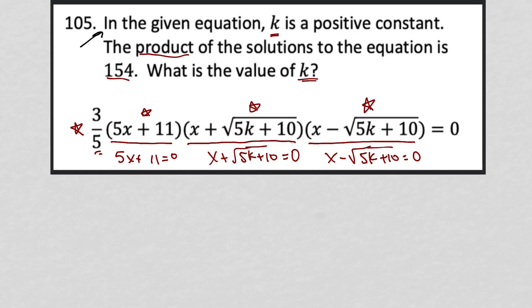From there, I'd find that 5x is equal to negative 11. And of course, that would mean that one of my solutions is x equals negative 11 fifths. From the second binomial, I'd see that x is equal to negative square root 5k plus 10 by subtracting root 5k plus 10 from both sides.